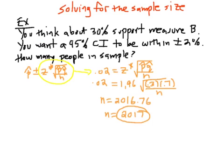There's one additional problem type in section 10.3, solving for the sample size. Typical problem: you think about 30% of people support measure B, and you want a 95% confidence interval accurate within plus or minus 2%. The question is how many people should be in your sample - what should n be? This circled part is the margin of error, which we want to be 2%. So 0.02 equals z-star square root of pq over n. Z-star is from inverse norm. We thought p was about 30%, so p is 0.3 and q is 0.7.